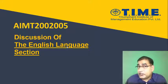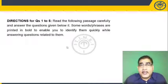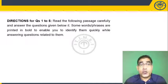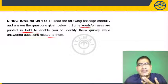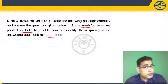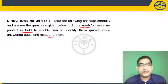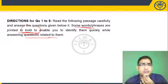So let's get started with the discussion. The first set of questions is RC, and the directions say: read the following passage carefully and answer the questions given below it. Some words and phrases are printed in bold to enable you to identify them quickly while answering questions related to them. This is a traditional model — quite common — where bold words are used to ask synonym or antonym questions.